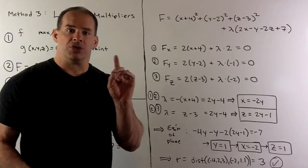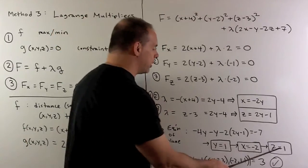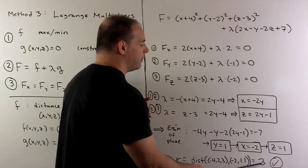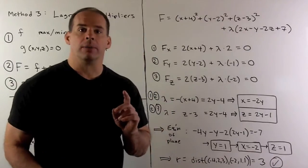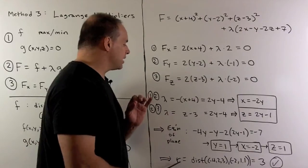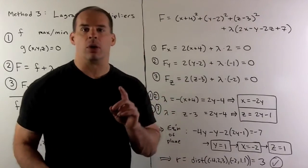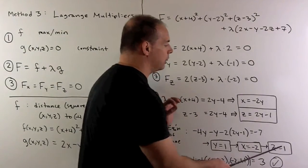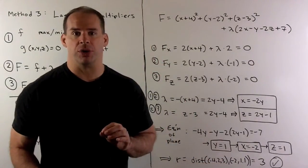Our radius is just going to be given by the distance from this point to the point minus 4, 2, 3. So, we get a 3. And we have two checks in our work. First, we have the radius coming out to be 3, as we've seen before. And the point where it occurs is minus 2, 1, 1, which we've also seen in part 2.